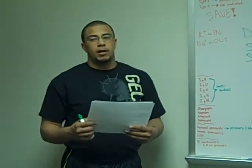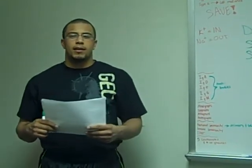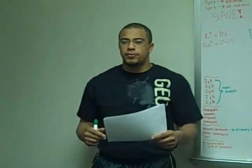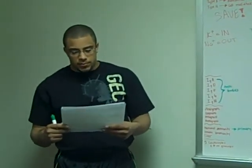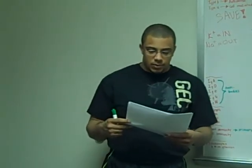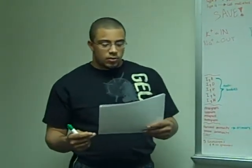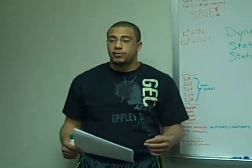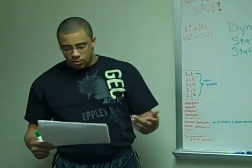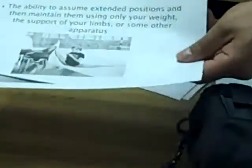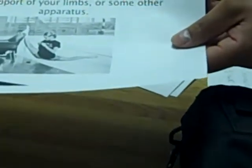And static passive flexibility — with the partner, or something like laying your back, flex your calves. It's close. This one is the ability to assume extended positions and then maintain them using only your weight. So instead of using a partner, you use an apparatus — like a wall. It's like going beyond your normal range and using only your body weight to support it. She looks comfortable. She actually does. It's weird.